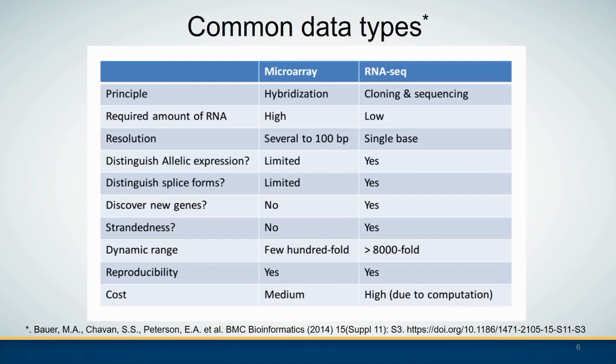Now let's compare the two types of data: microarray and RNA-seq. Compared to microarray, RNA-seq has many advantages — for example, it has higher resolution and it can detect allelic expression and new genes. The only drawback of RNA-seq data is that the cost is very high. But in recent years the sequencing cost has been decreasing and most labs can now afford it. So in this presentation I will be focusing on the analysis of RNA-seq data.